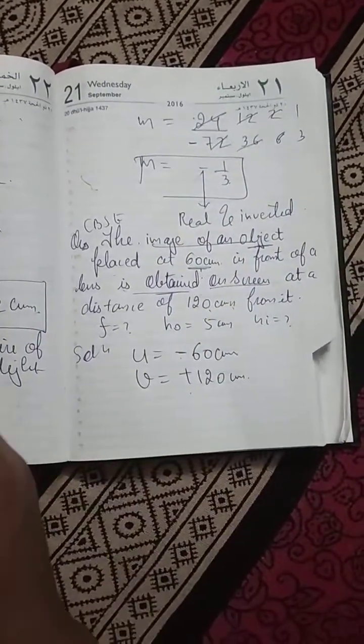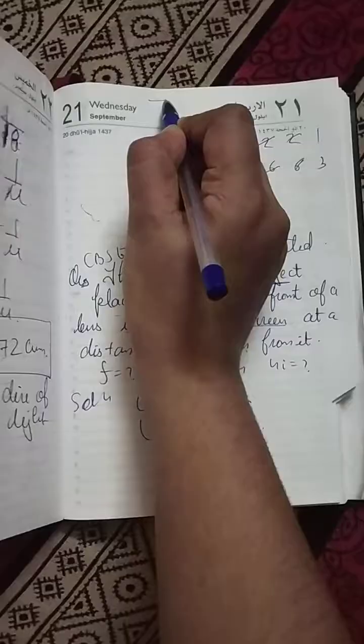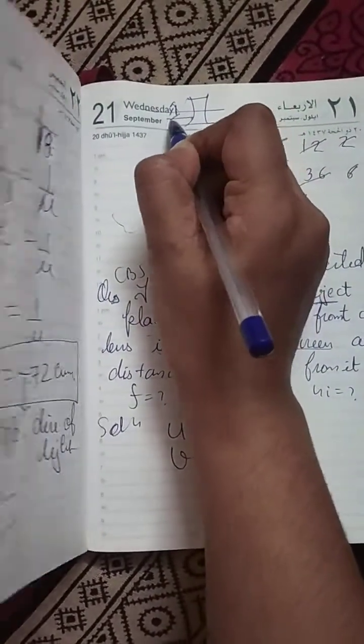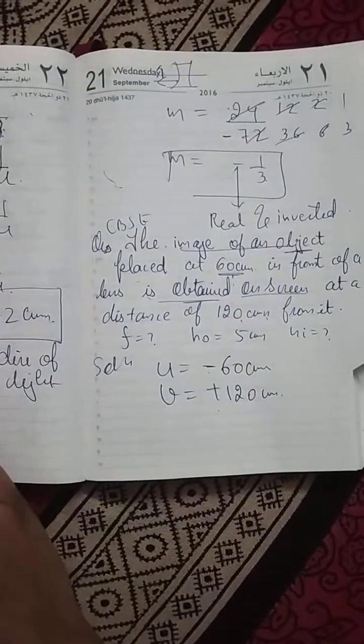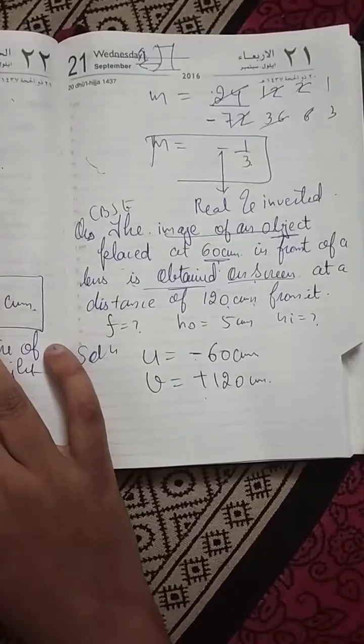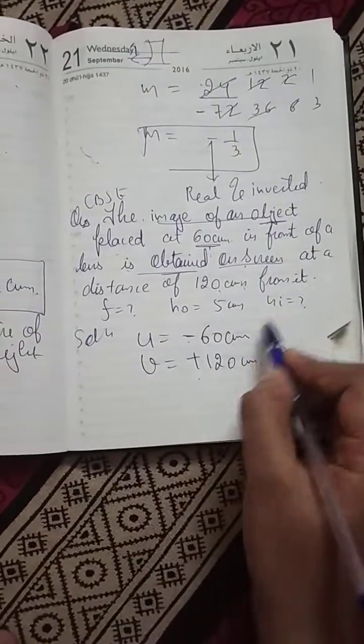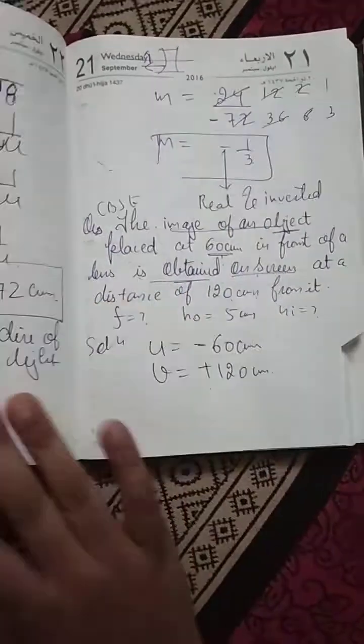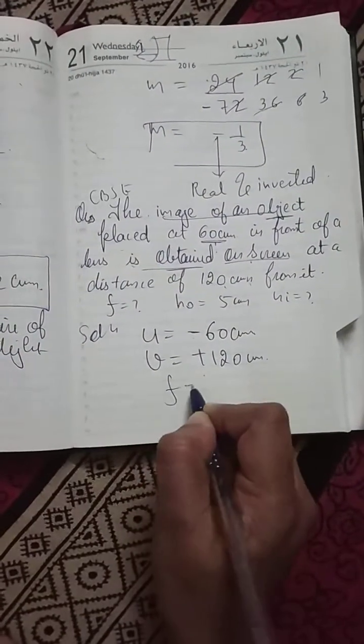Image always forms opposite to the direction of light with a concave lens. But here they have obtained on a screen. It means this lens is a convex lens, and in the direction of light because it's obtained on a screen. Then we have to find F also.